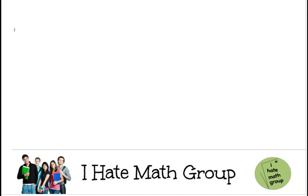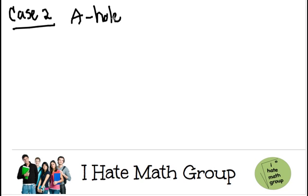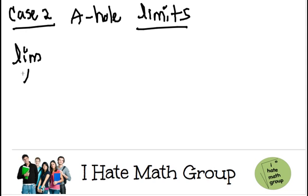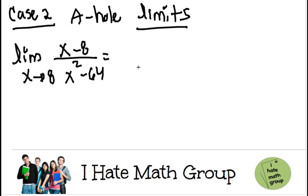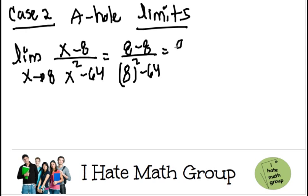Now let's go to case number 2. I call these the a-hole limits, and you're going to see why — it's funny but it's a good way to remember. Let's say we have the limit when x approaches 8 and then we have (x minus 8) over (x squared minus 64). I call this the a-hole limit because when I plug in 8 on the top and bottom, I get 0 over 0.